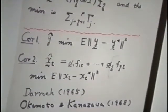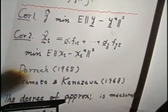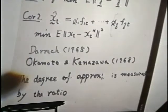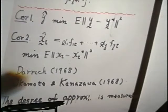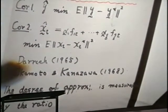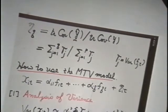Now, here is the corollary. Of course, y hat minimizes the Euclidean norms since it minimizes this mean squared error matrix. Also, for a given t, it minimizes this mean squared error. In the principal component model, Darrow showed this optimality, and Okamoto and Kanazawa showed this kind of optimality for the principal component model. However, here, we allow the components to be correlated. And the degree of approximation is measured by this ratio, as in the case of the principal component model.